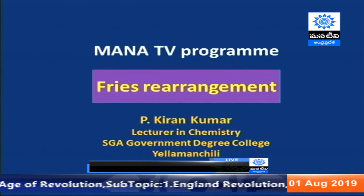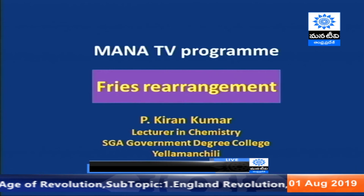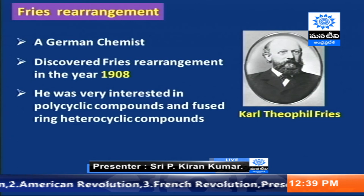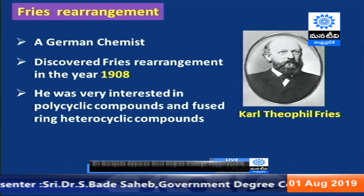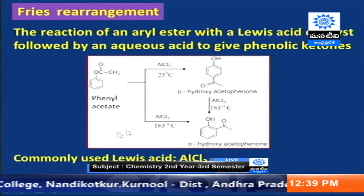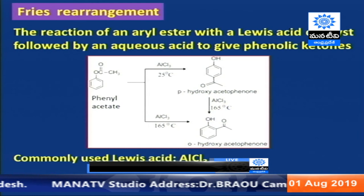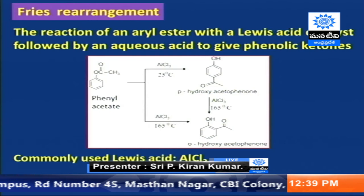I will now discuss the Fries rearrangement, proposed by German chemist Fries in 1908. In the Fries rearrangement, an aryl ester is converted to a phenolic ketone when treated with a Lewis acid. Several Lewis acids can be used, such as BF3 or AlCl3; most commonly, aluminum chloride is used as the Lewis acid catalyst.